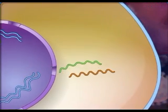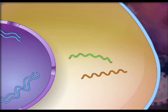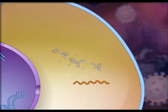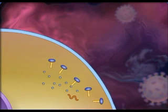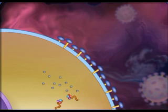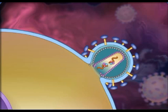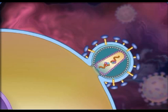Viral messenger RNA is translated, yielding viral enzymes and structural proteins. Some of the functional proteins are formed by cleavage of a long polyprotein by the enzyme protease. Protease inhibitors interfere with this step. GP41 and GP120 are inserted into the host cell membrane, and the structural proteins surround the viral RNA to form the core. Finally, the virion is released by budding.